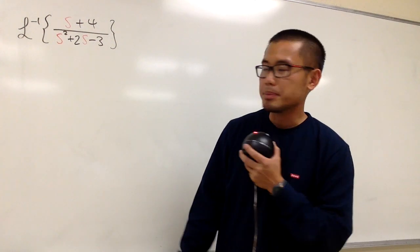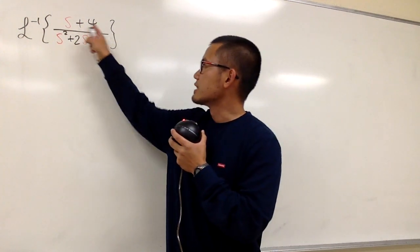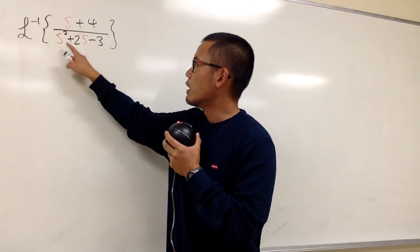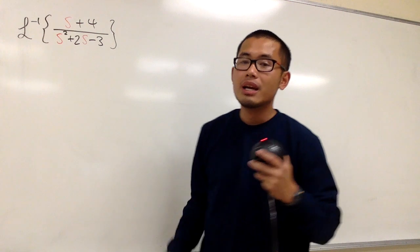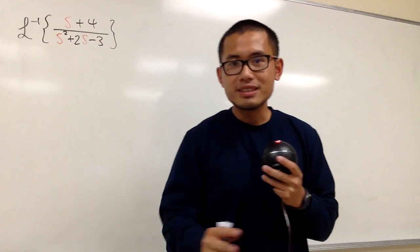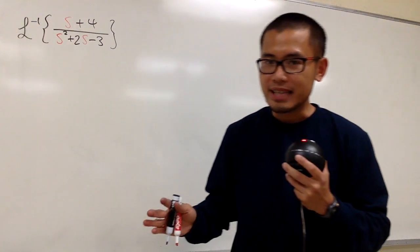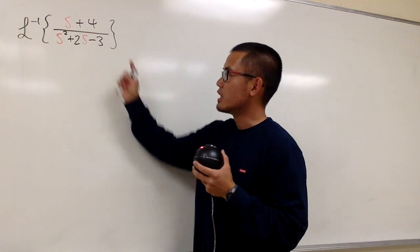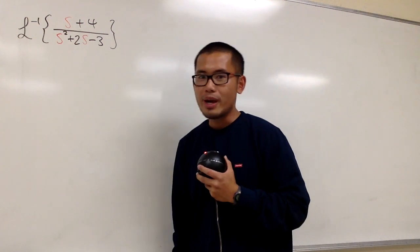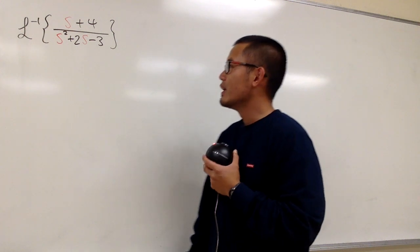We're going to figure out the inverse Laplace of (s plus 4) over (s squared plus 2s minus 3). If you notice on the Laplace table, there's no entry that will give us this right away.